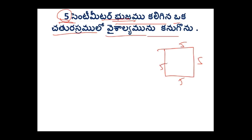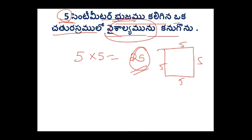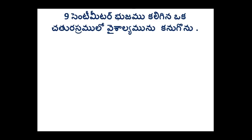If we use this here, you can use 65 meters. 5 into 5 is 5.